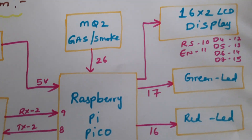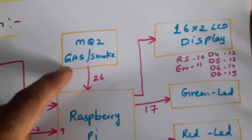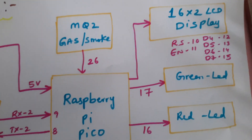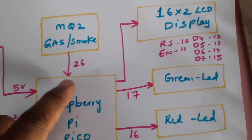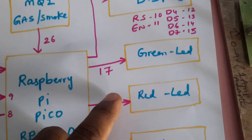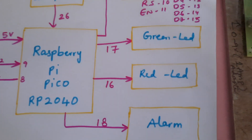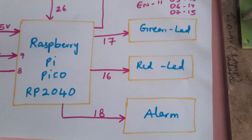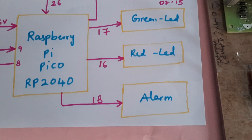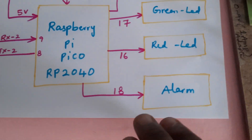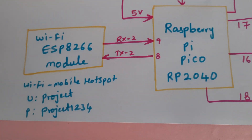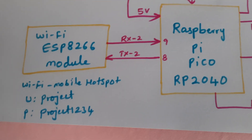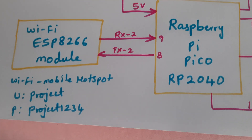The MQ2 gas and smoke sensor is connected to ADC0 on the 26th pin. A red LED and green LED are connected to GPIO 17 and 16 respectively, and the alarm is connected to pin 18. A Wi-Fi hotspot module is also required.